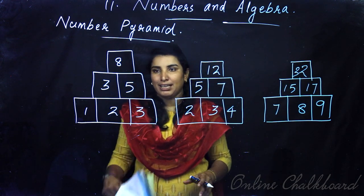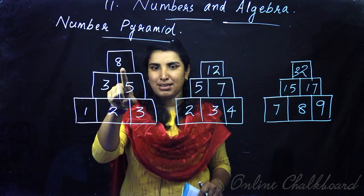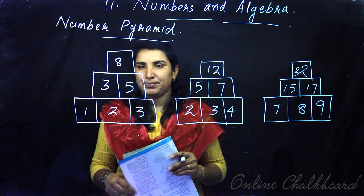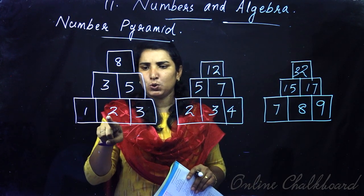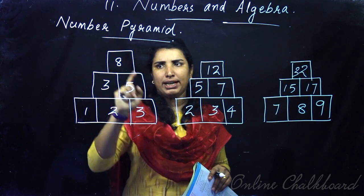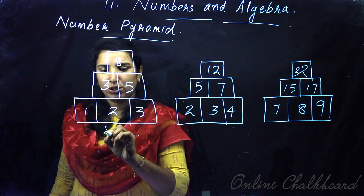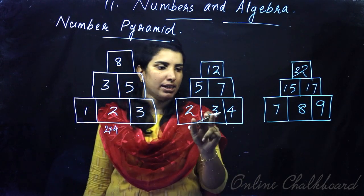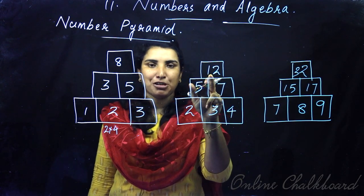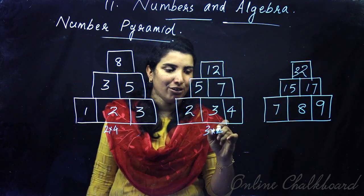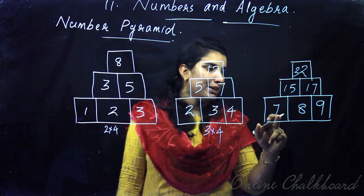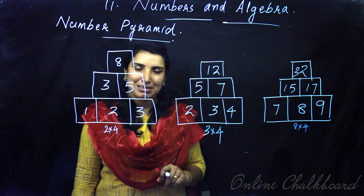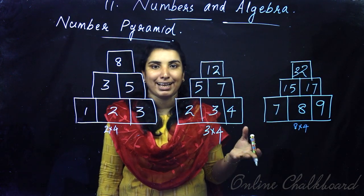Let's do this again. Here we have 1 times 8, then 2 times 8. This is 2, 2 times 4. Then we have 3 times 4, which is 12. Then we have 4 times 4. Then we have 8 times 4, which is 32. Then we have 3 times 4 times 32. This is a general property.